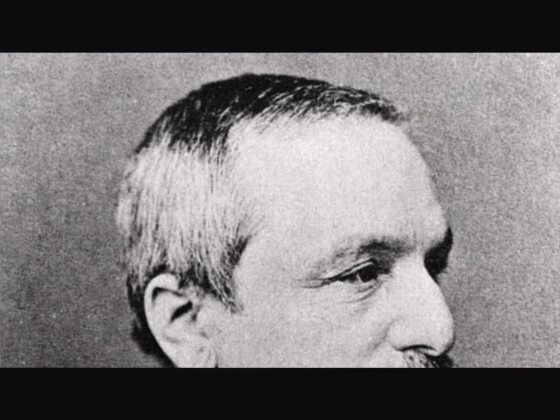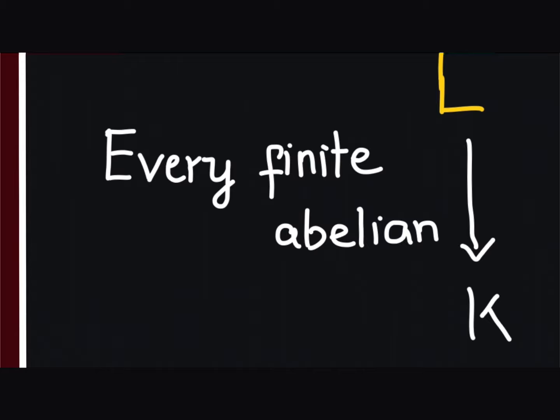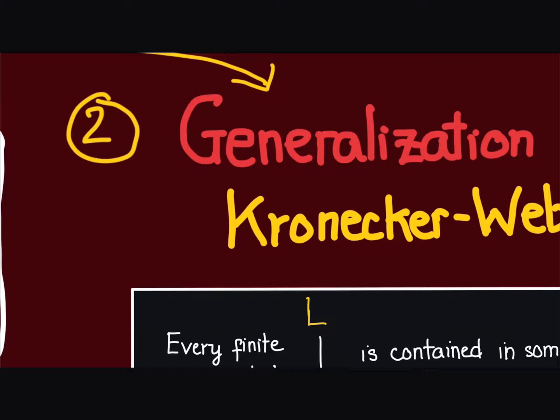As we have mentioned, Kronecker wonders whether there is a generalization of Kronecker-Weber for finite abelian extensions of any number field k. It turns out that Takagi's theorem actually leads to a generalization of Kronecker-Weber.